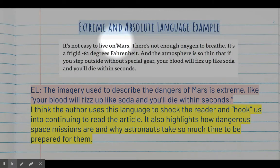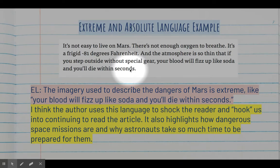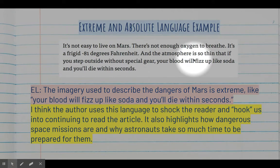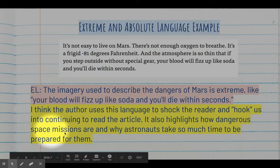Here's an example from the Living on Mars article: it's not easy to live on Mars — there's not enough oxygen to breathe, it's a frigid negative 81 degrees Fahrenheit, and the atmosphere is so thin that if you step outside without special gear, your blood will fizz up like soda and you'll die within seconds. That phrase is extreme language. Why did the author say it like that? I think the author uses this language to shock the reader and hook us into continuing to read, and it highlights how dangerous space missions are.